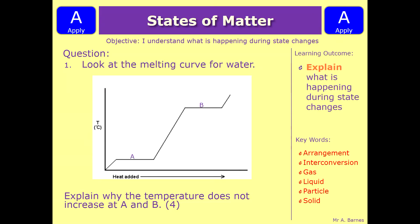Okay, let's have a look at a question then. So in the exam, you might be given a melting curve that looks like this, and you may get the question saying explain why the temperature does not increase at A and B. So we're looking here and here. What I'd like you to do is have a go at answering the question, so pause the video now, and then unpause when you've had a go.